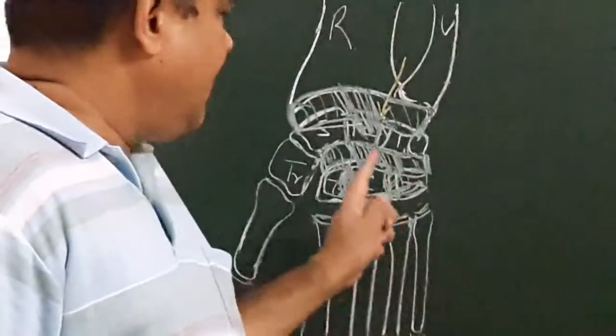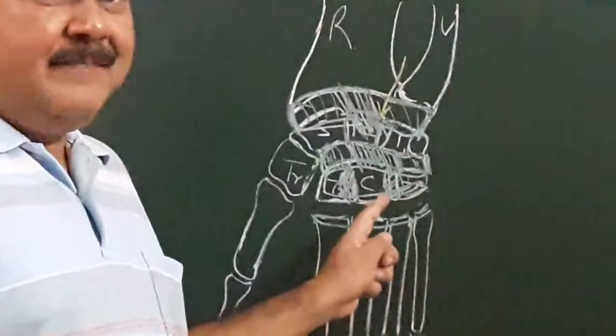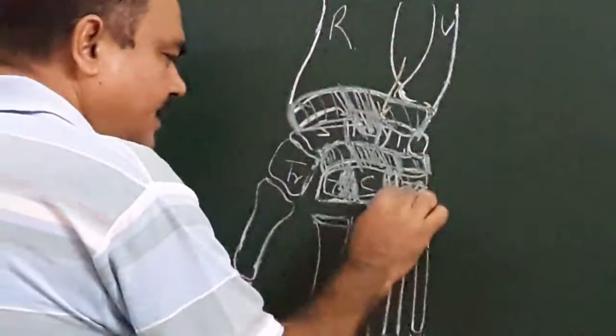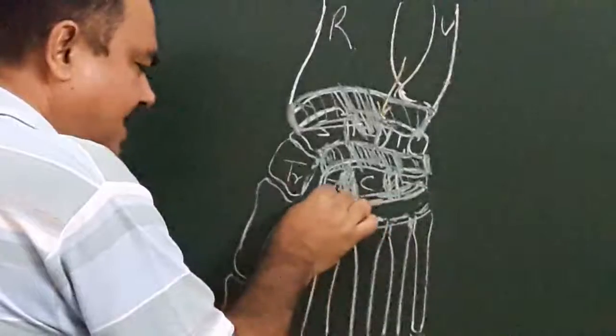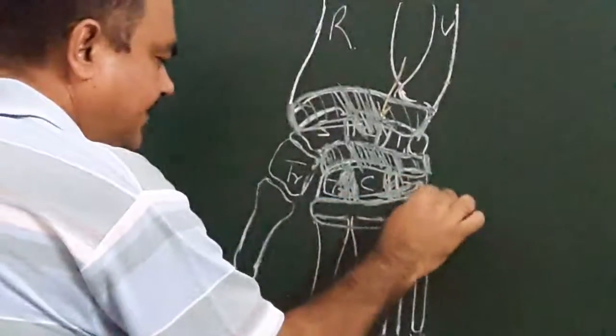The joint is an ellipsoid joint, and the capsule is attached with the margin like this.